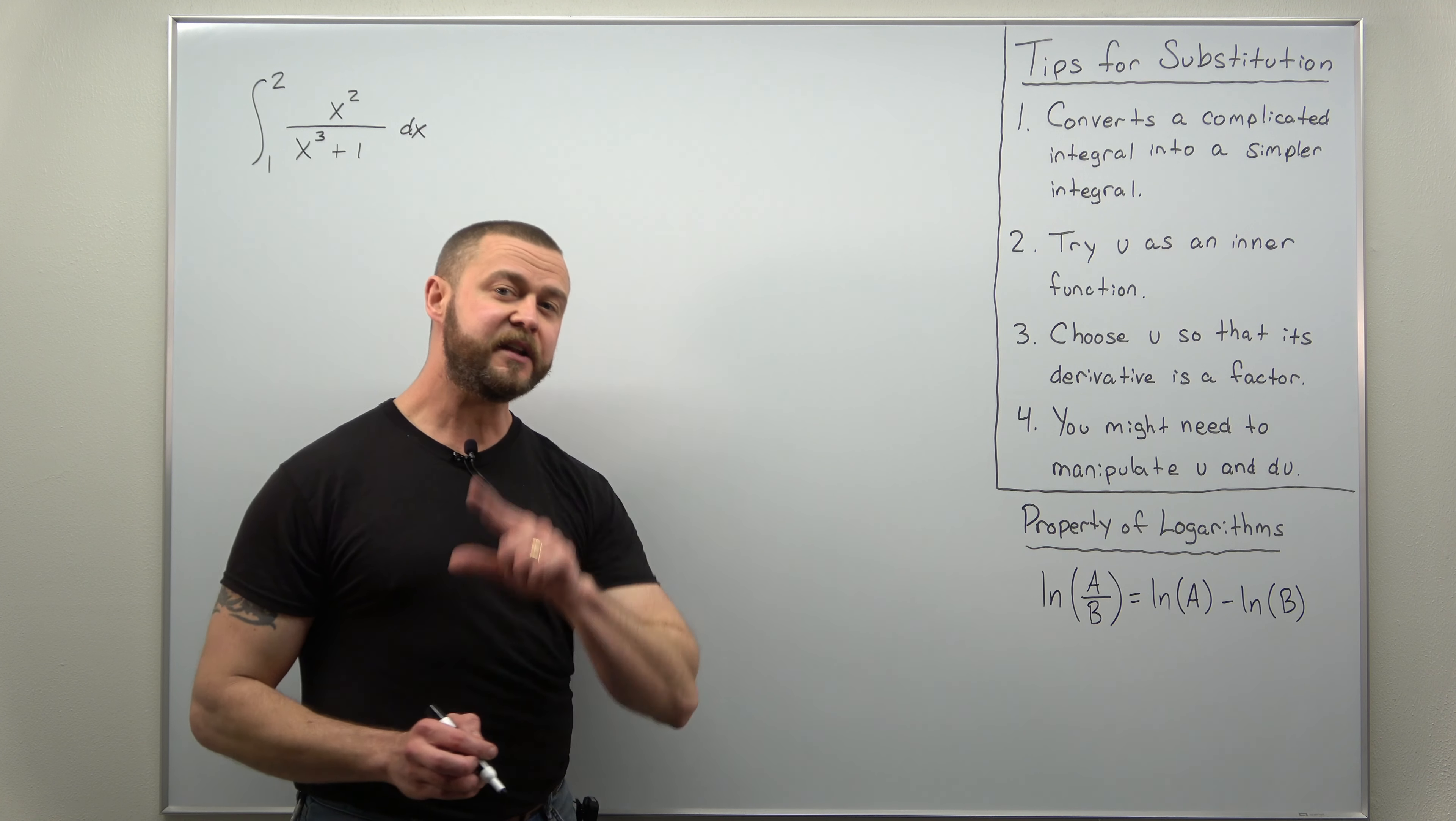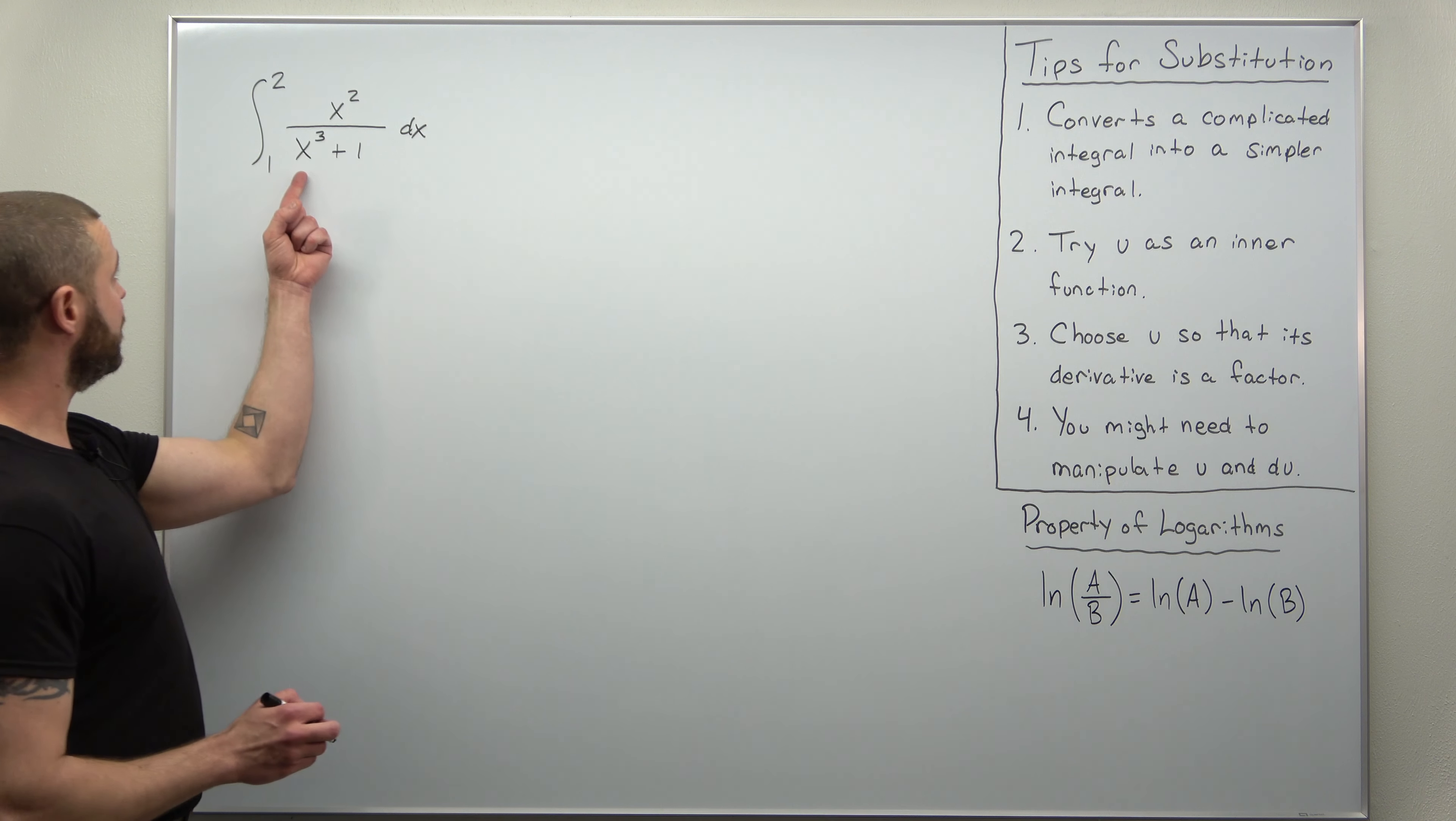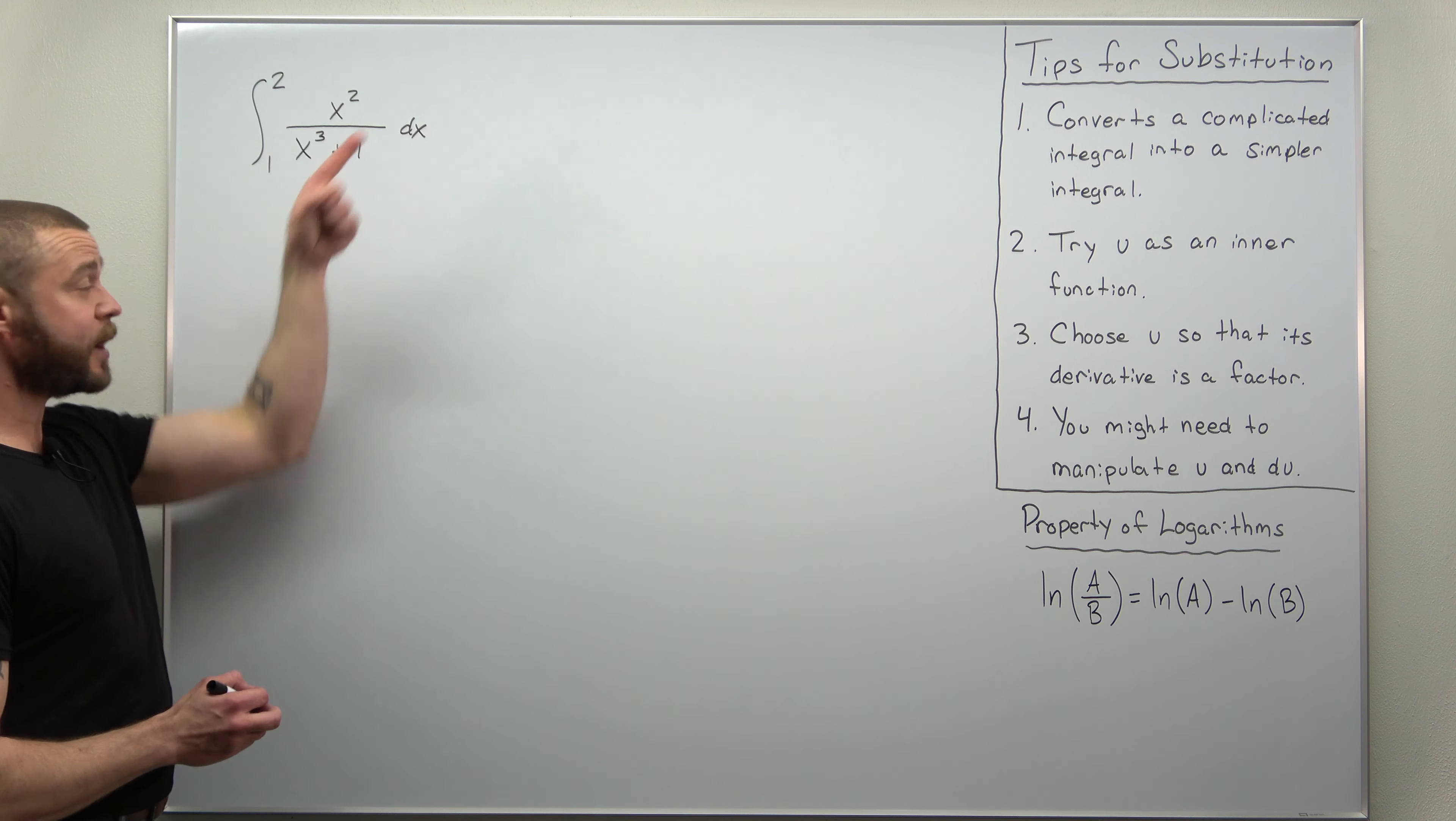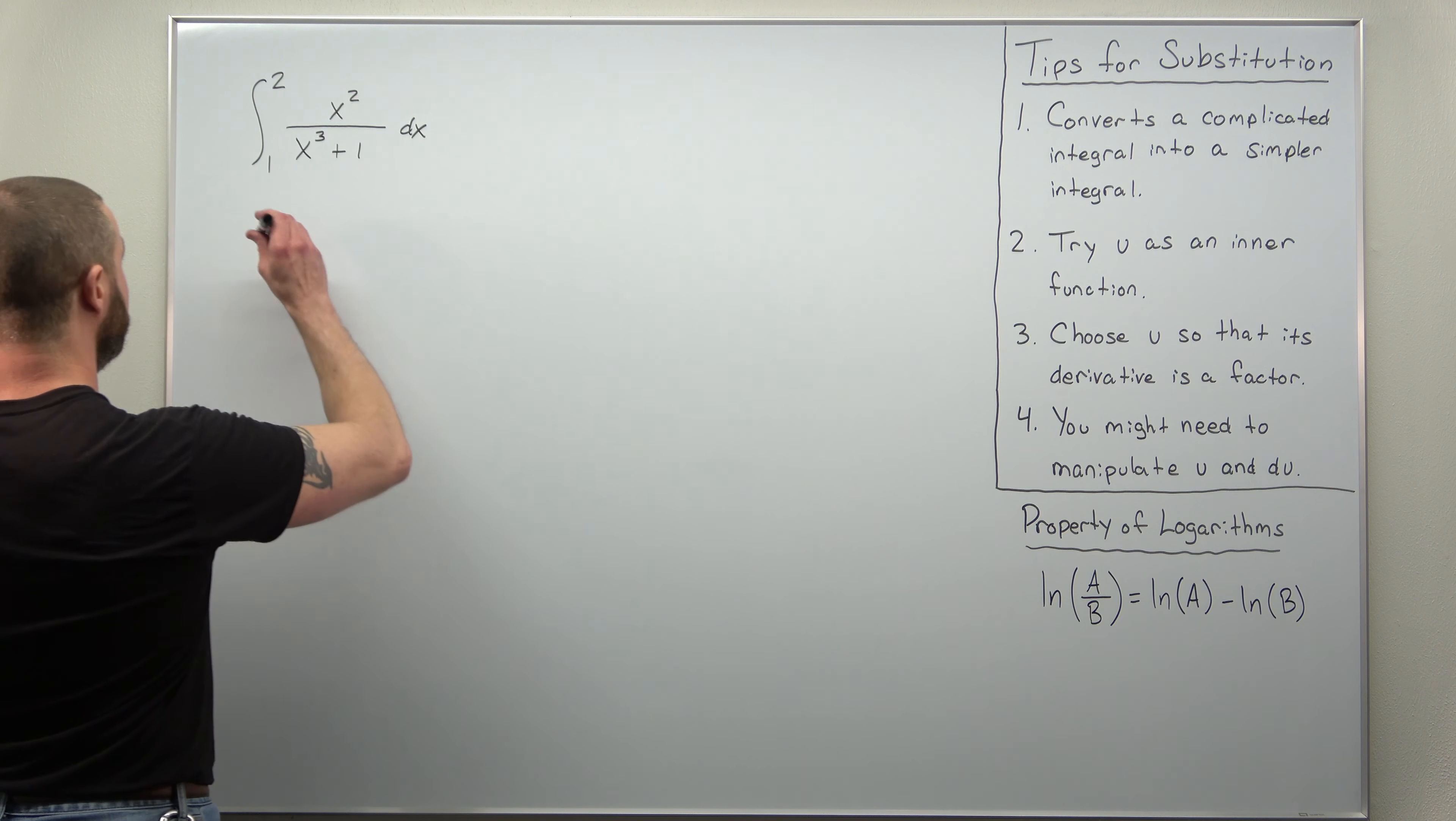u so that way its derivative is a factor. And if we keep in mind here when we differentiate x cubed the derivative will give us an x squared. So let's try u as the denominator x cubed plus one.